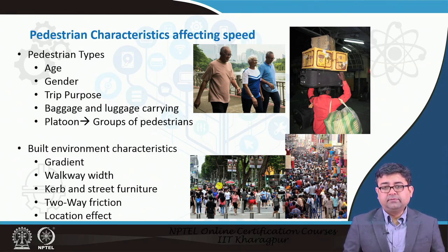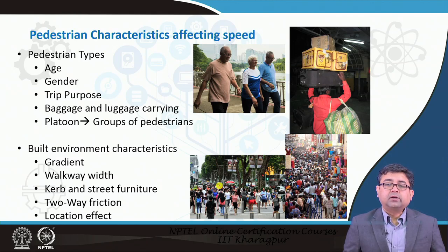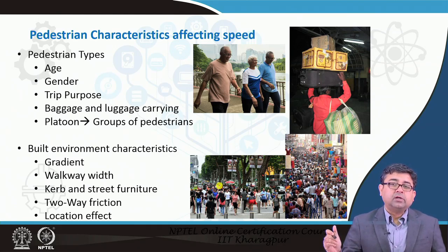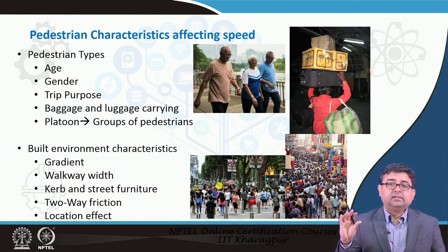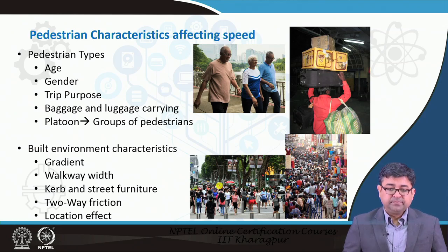Given a certain length and width of sidewalk, you can accommodate N number of people per unit time. This N per unit time depends on how quickly people move across that facility. Even for a zebra crossing, you need to know how fast people can move across and what the width of the road is, in order to give the signal sufficient pedestrian walk time. Those are the two primary reasons for which you need to know the factors that affect pedestrian speed.